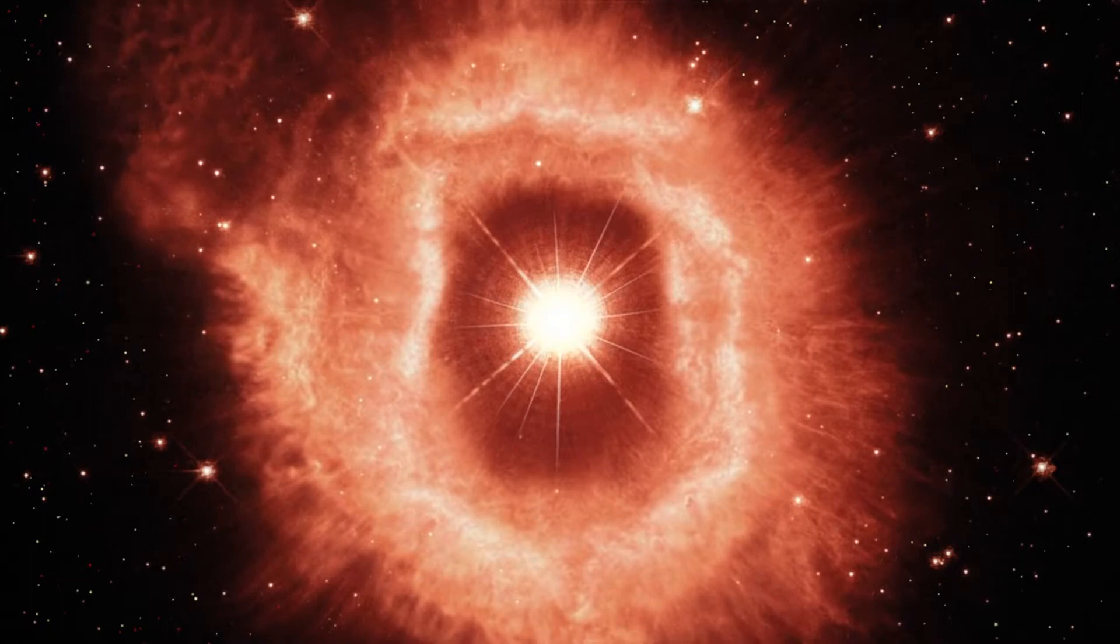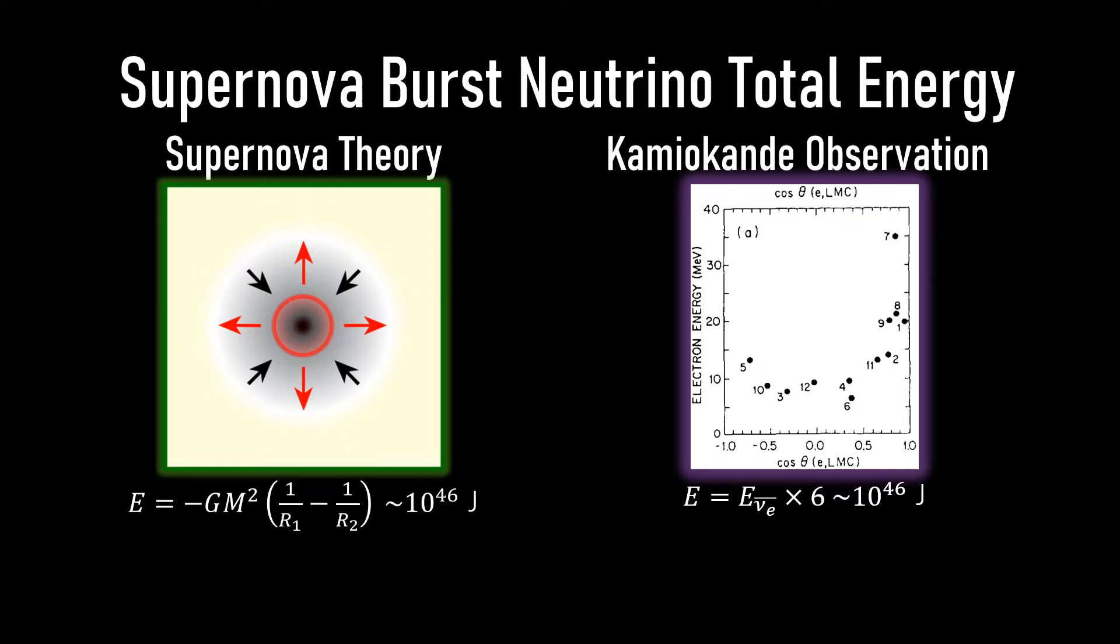If the core of a star that has finished nuclear burning exceeds about 1.3 Chandrasekhar masses there is a gravitational collapse, halted when all nucleons come as close as in nuclear matter. The process electron plus proton goes to neutron plus neutrino gives a neutrino burst.